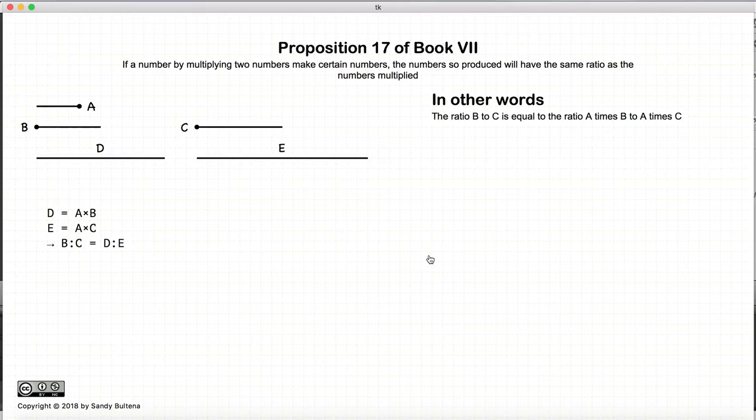Now in this proposition, we basically start with two numbers, B and C, and we multiply them by the same number, A, with the result being D and E. And this proposition states that if we do that, then the ratio of B to C will be equal to the ratio of D to E.